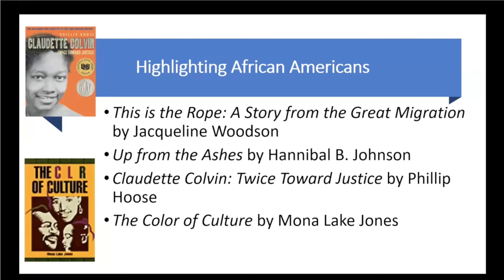Up from the Ashes by Hannibal Johnson is one of several books he's written about the Tulsa race riots, now referred to as the Tulsa Massacre. If you're not familiar with Black Wall Street and the Tulsa race riots, you will find this very informative. Claudette Colvin was a teenage girl in 1955 — nine months before Rosa Parks' bus incident — who refused to give up her seat to a white woman on a segregated bus in Alabama and was arrested. She was shunned by her peers and dismissed by her community, but months later was able to testify in the Rosa Parks bus case.